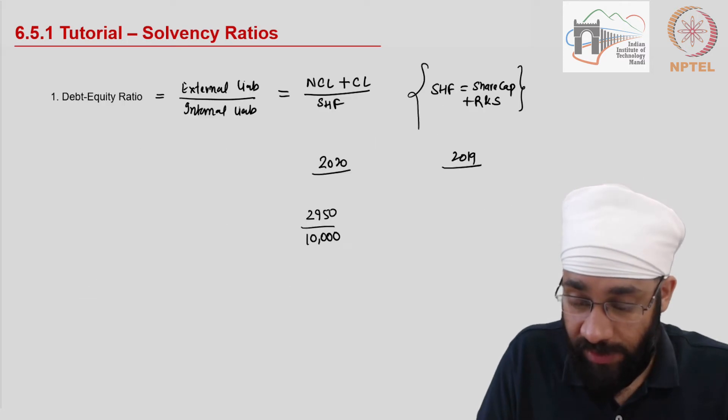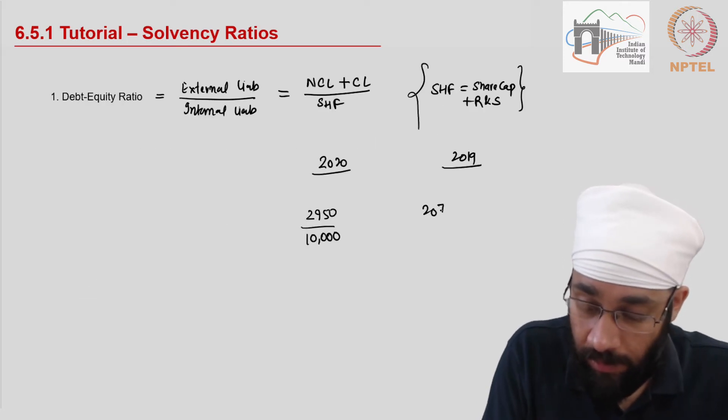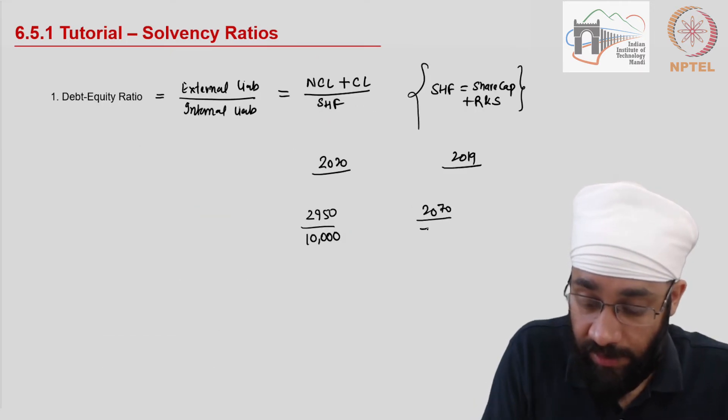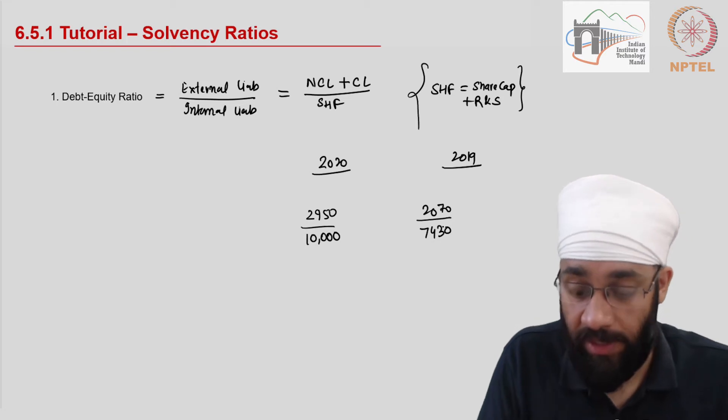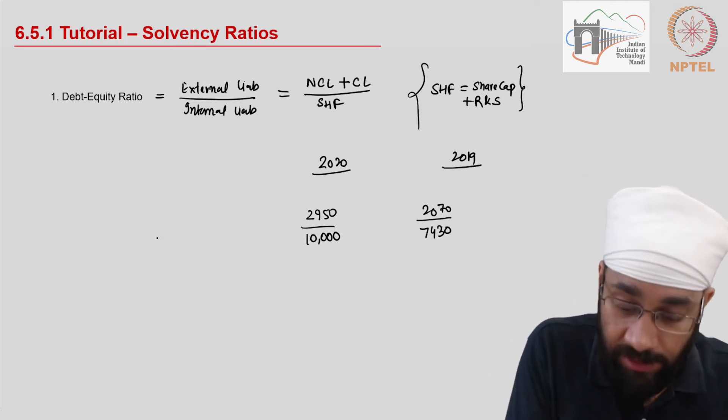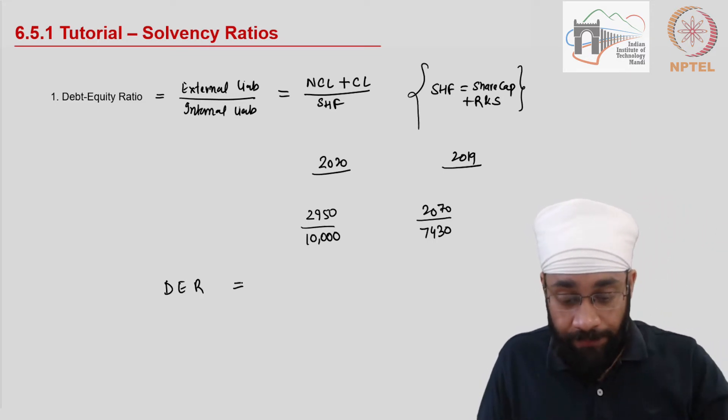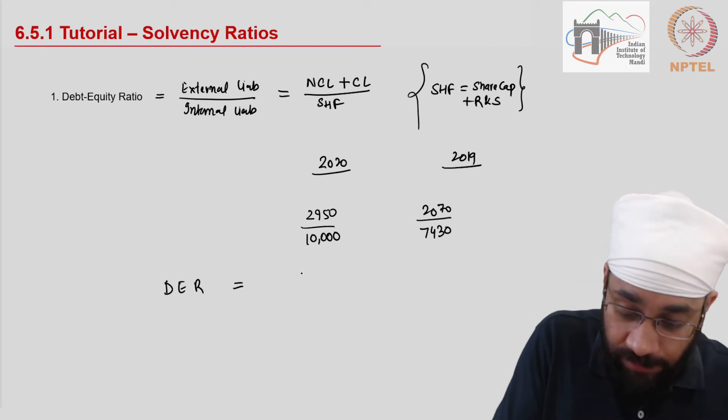10000 and similarly 2070 divided by 7430. So these numbers when calculated will give you debt to equity ratio.